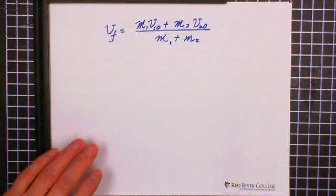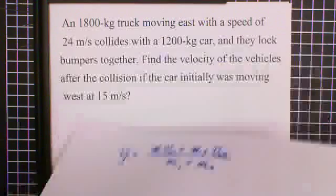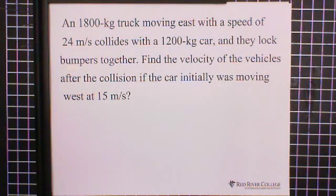Let's look at an example. An 1800 kilogram truck moving east with a speed of 24 meter per second collides with a 1200 kilogram car, and they lock the bumpers together. Find the velocity of the vehicles after the collision if the car initially was moving west at 15 meter per second.